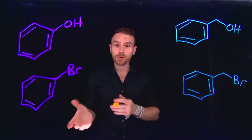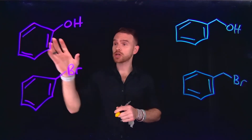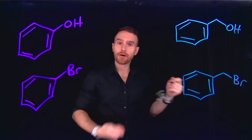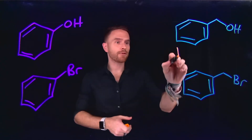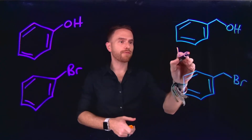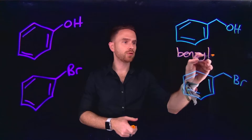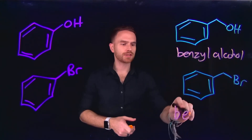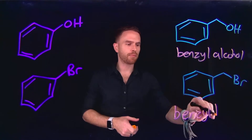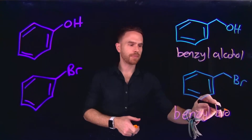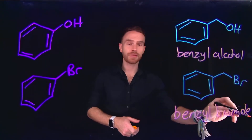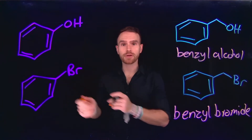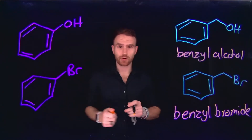These benzylic positions are rich in electron density, which makes them susceptible to various chemical transformations. Previously, we learned about various benzene derivatives such as phenol and bromobenzene. On this side, we see their counterparts which are benzylic. For example, the first compound is benzyl alcohol, and the second compound is what is known as benzyl bromide. These compounds undergo reactions that are incapable of happening at benzene rings.